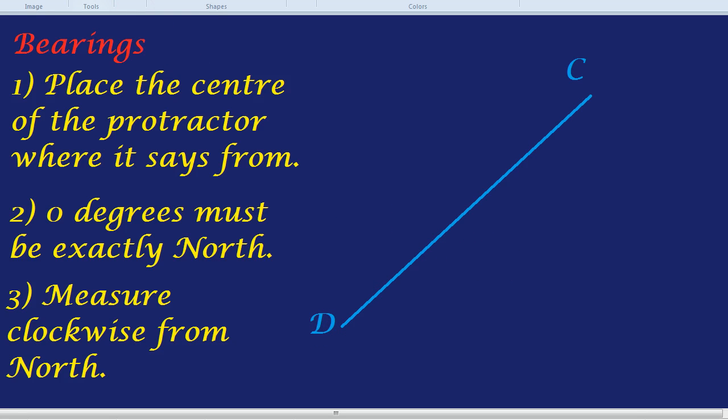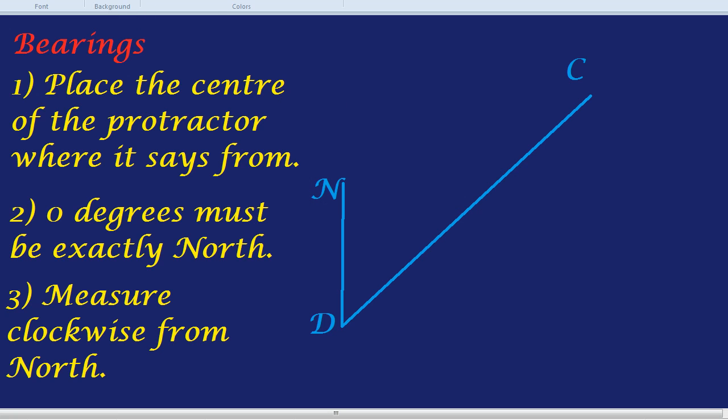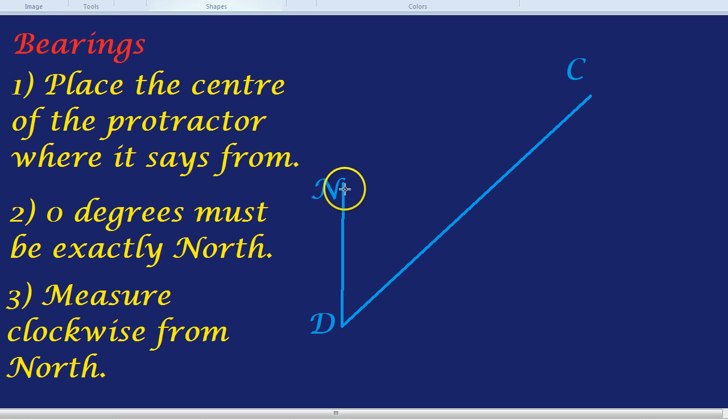And this time, it's going to be more mathematical and we wouldn't need a protractor because the diagram, it would say something like diagram not drawn accurately or not drawn to scale. And we'd have our north line would have to be given to us because we can't use a protractor. So, that would be our north line and it would have an arrow and an N.